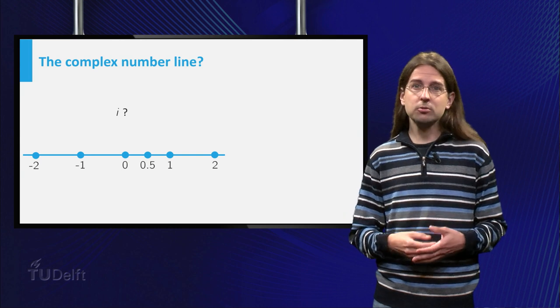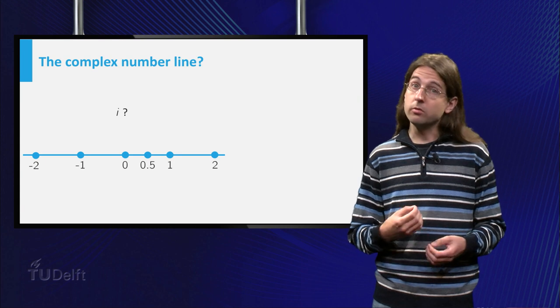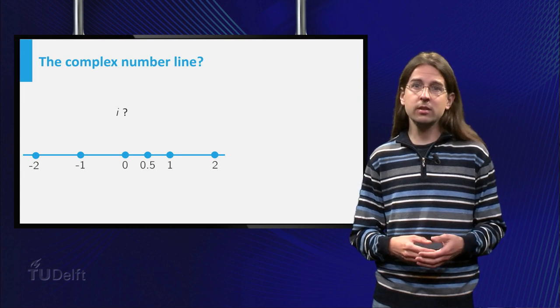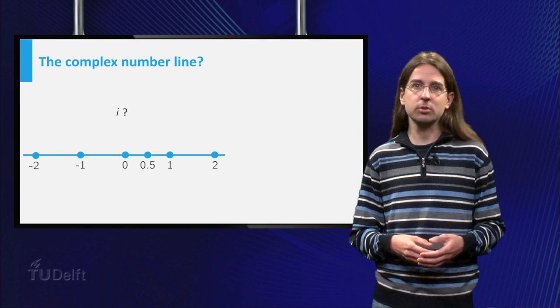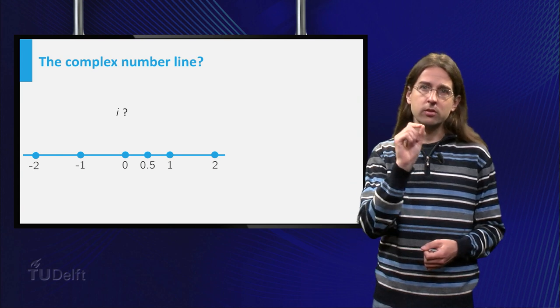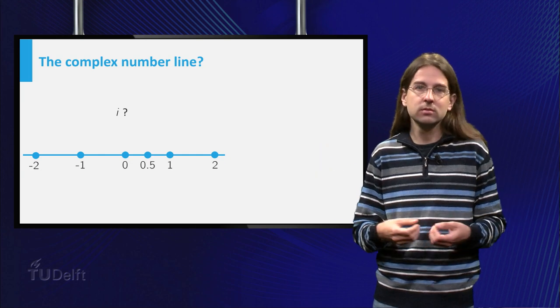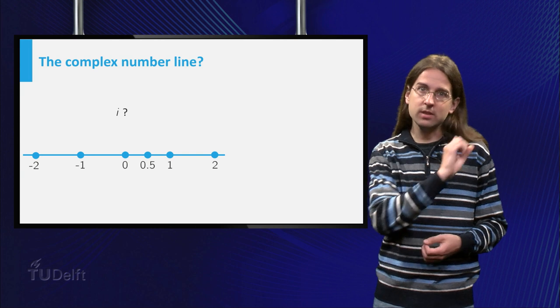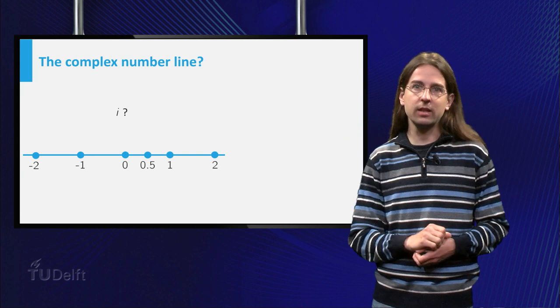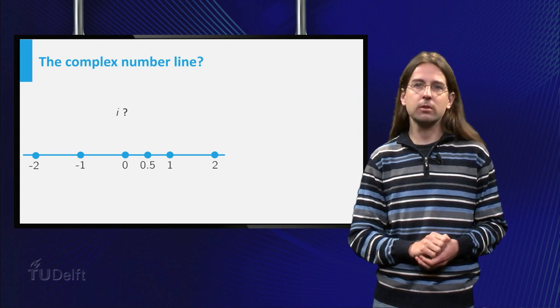Let us now try to find a visual way of thinking about complex numbers. You know that you can use the number line to represent all real numbers. Every real number has a spot on this line. Zero is in the middle, one is slightly to the right of zero, minus one slightly to the left of zero, and one half in between zero and one.